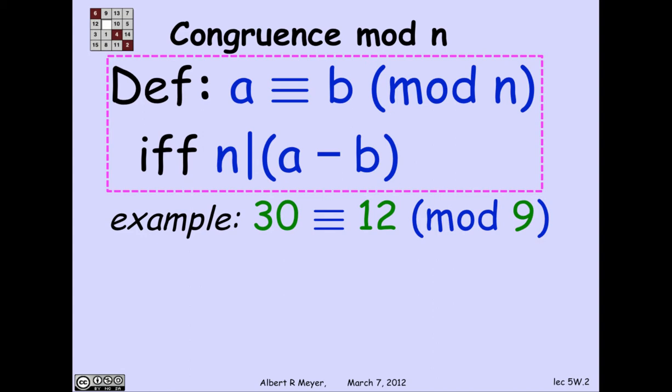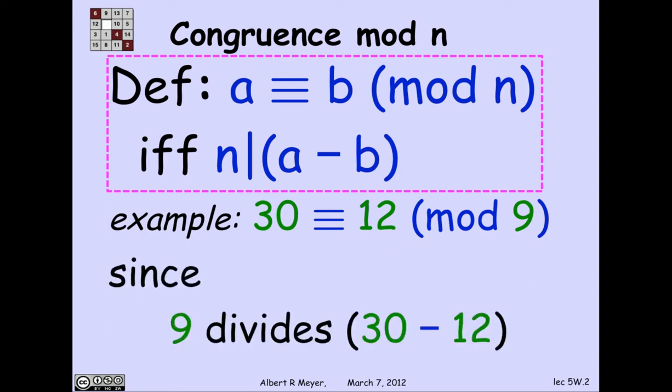Well, let's just practice. 30 is equivalent to 12 mod 9 because 30 minus 12 is 18, and 9 divides 18.